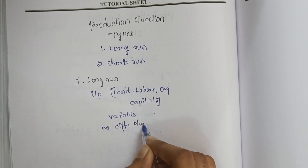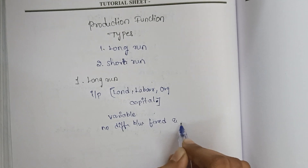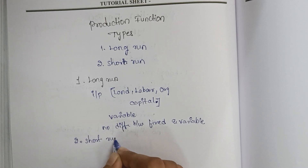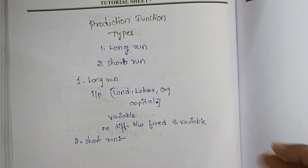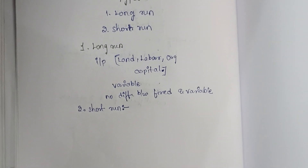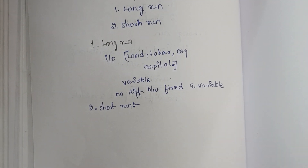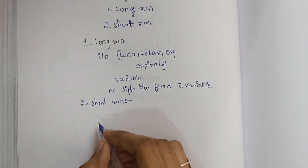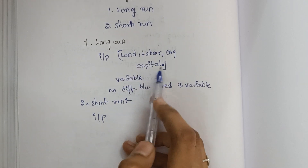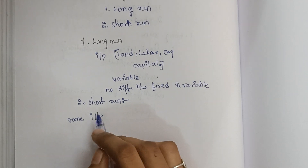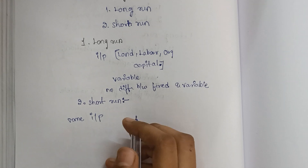In the long run, all factors are continuously changing — there is no fixed and no variable. The second type is short run, which describes changes in production functions over a short duration, such as six months or one year. In the short run, some inputs are changed and some inputs are unchanged.